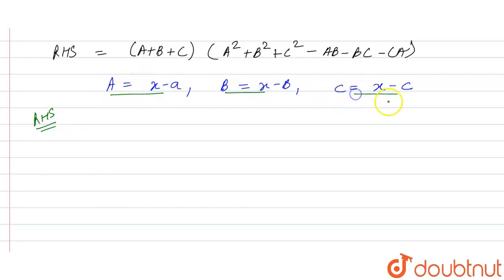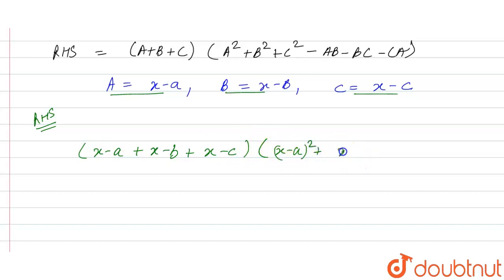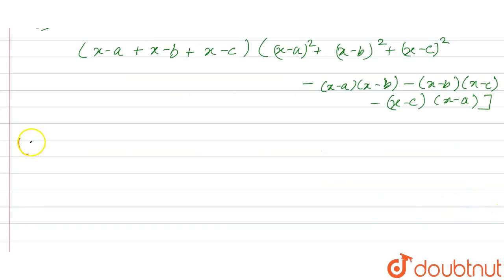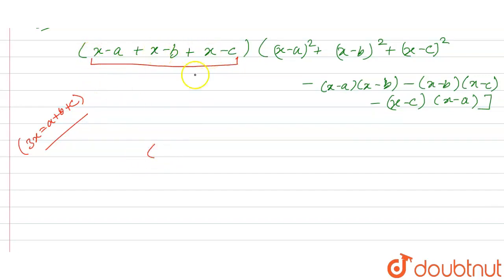Substituting the values, the RHS becomes: (x minus a) plus (x minus b) plus (x minus c), multiplied by the remaining squared and product terms. Looking at the first factor, we have x plus x plus x which equals 3x, minus (a plus b plus c), with the rest of the terms remaining as they are.